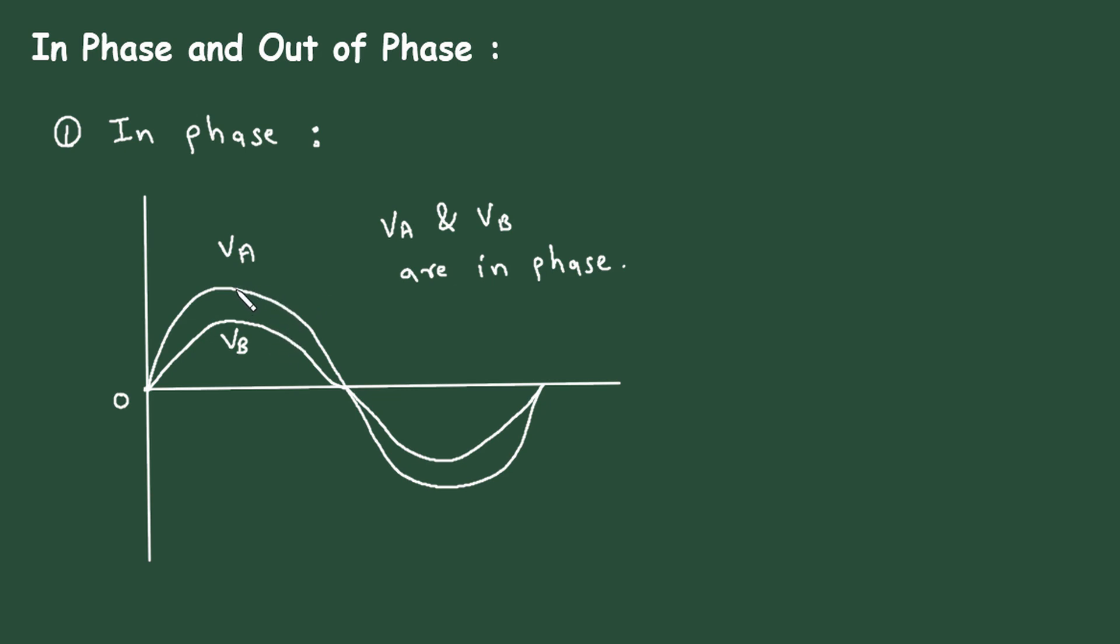But here we can see the amplitude of VA is greater than the amplitude of VB. So when we draw the phasor diagram, for phasor diagram we have to take VA as a reference. But the amplitude of VA is greater than the amplitude of VB. That's why the length of this VA will be greater than the length of VB. Now here VB will be on the same line. This will be VB, but the length of VB will be smaller because the amplitude of VB is smaller.